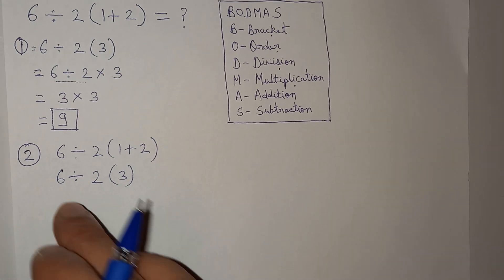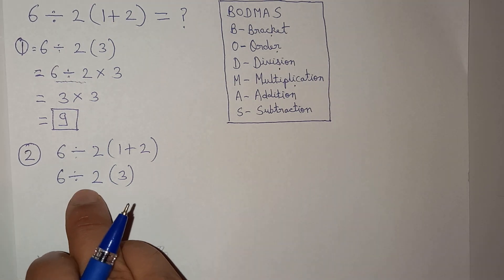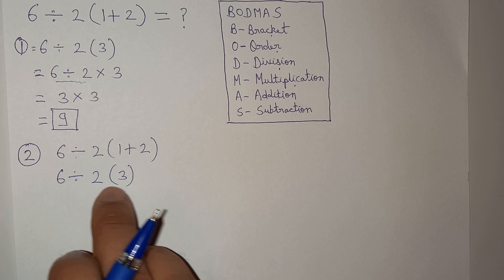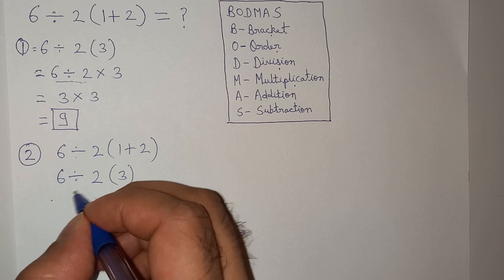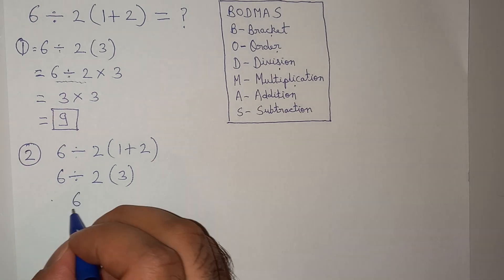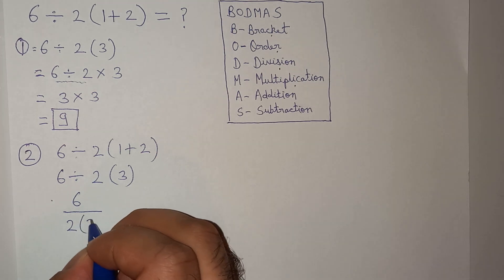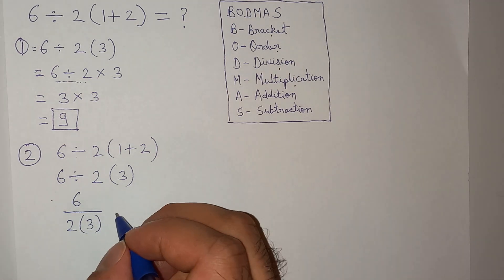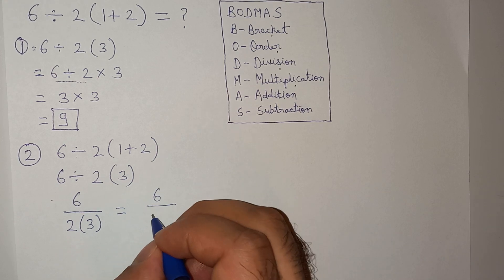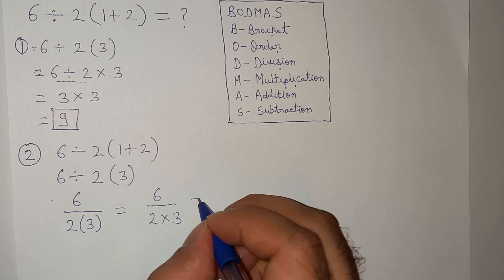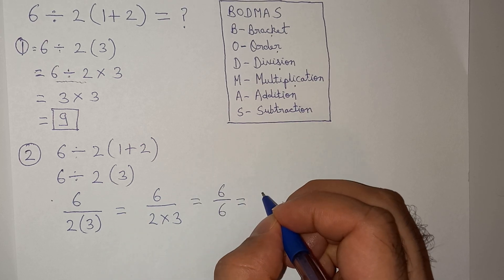Now historically, this expression was considered as 6 divided by the entire expression 2(3). So 6 ÷ 2(3) will be 6 ÷ (2 × 3), which means 6 ÷ 6 = 1.